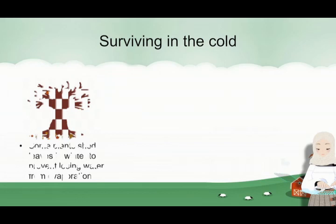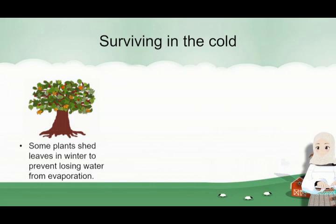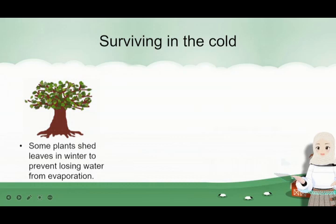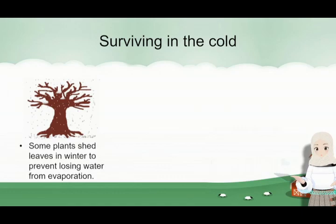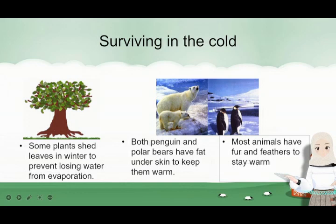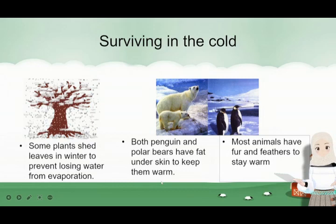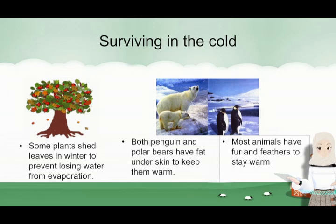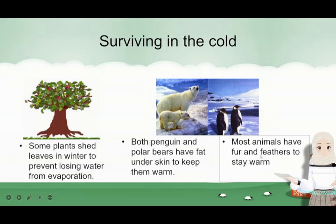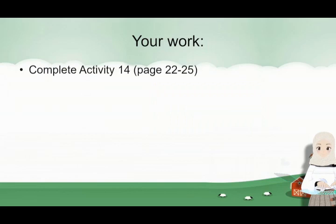Surviving in the cold. Some plants shed leaves in winter to prevent losing water from evaporation — they lose the leaves so that when it's cold, they don't lose their water. For animals such as polar bears and penguins, they both have fat under the skin to keep them warm. And for most animals, kabanyakan binatang, such as bears, cats, or birds, they have fur and feathers to stay warm.